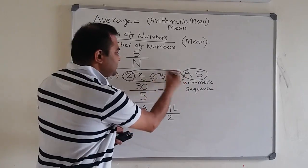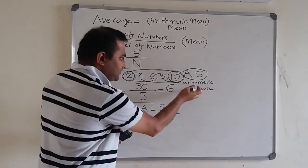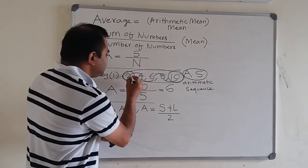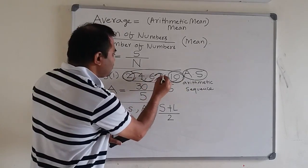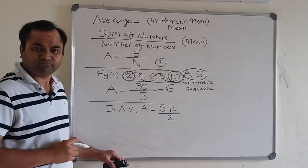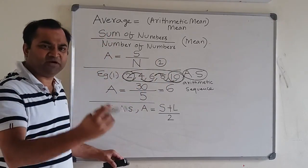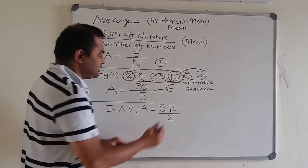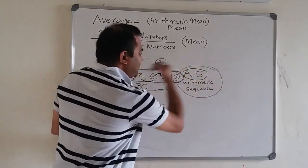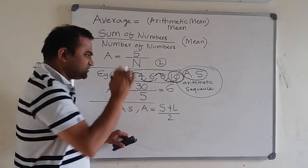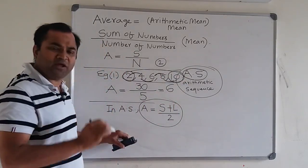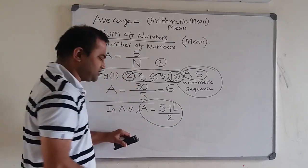Here the smallest number is 2 and the largest is 10. Because the difference between any two consecutive numbers is a constant 2, these numbers 2, 4, 6, 8, 10 are in arithmetic sequence. Since they are in arithmetic sequence, you can use this shorter way for finding their average.